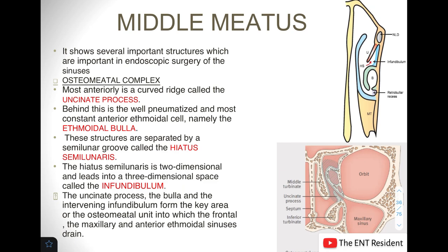The first thing we need to know in the middle meatus is the ostiomeatal complex. It consists of a number of structures in the middle meatal region. Most anteriorly you will find a ridge known as the uncinate process, as you can see in the picture. This is the uncinate process anteriorly, with the nasal septum medially.